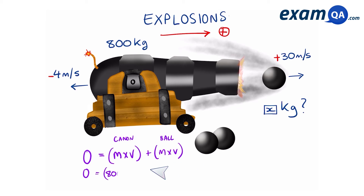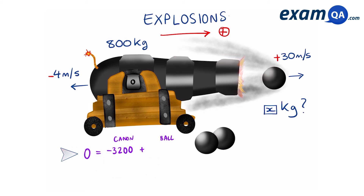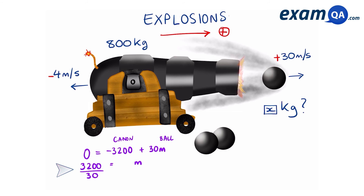We have 800 times minus 4, added to the mass of the ball times the speed. We can now simplify this and rearrange to find the mass, and that gives us a final answer of 106 kilograms for the mass of the ball.